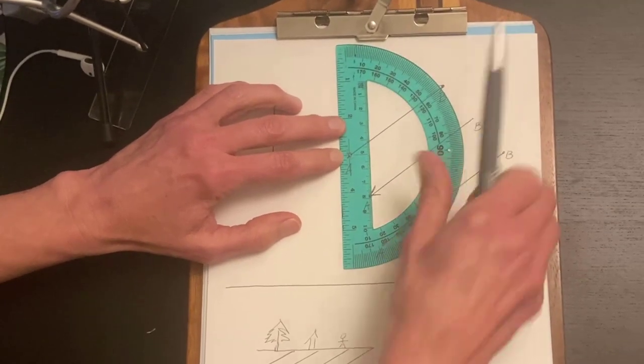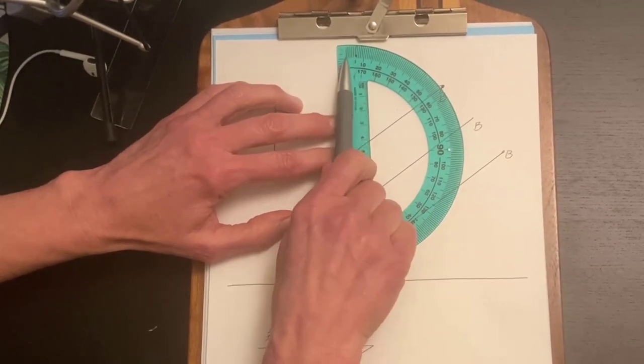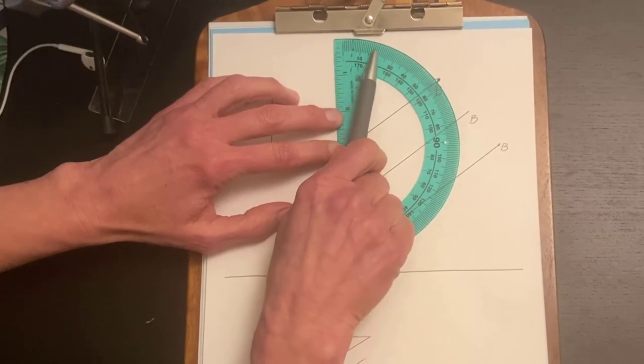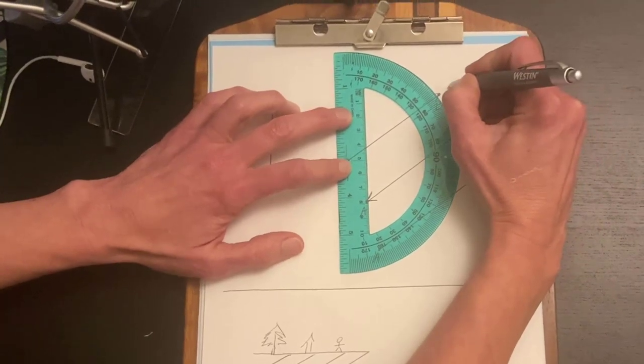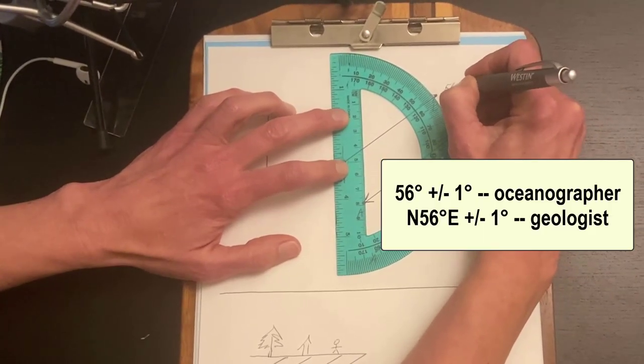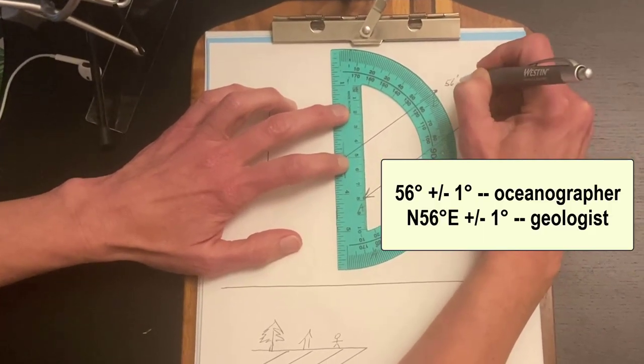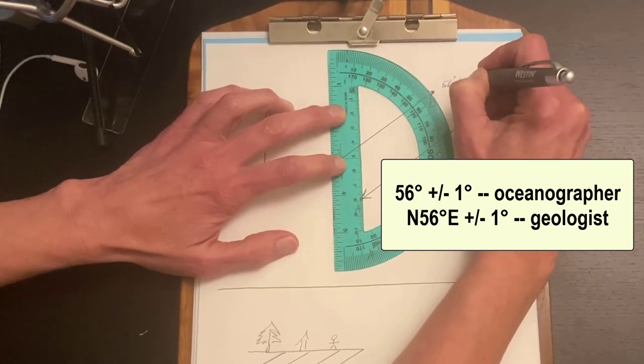So it's going to look like this. It's facing north and so I am measuring the angle to the right of north or to the east of north and it ends up being 56 degrees plus or minus one degree.